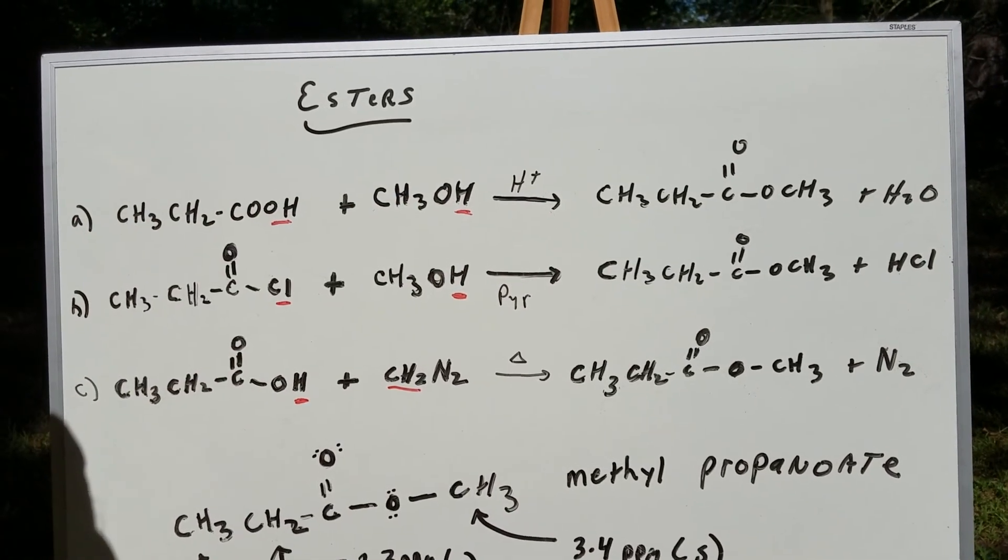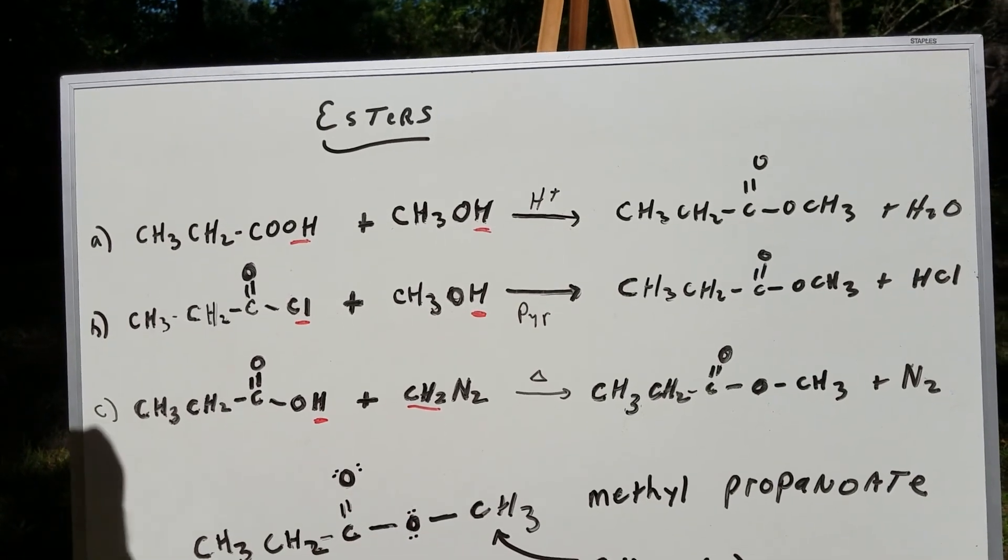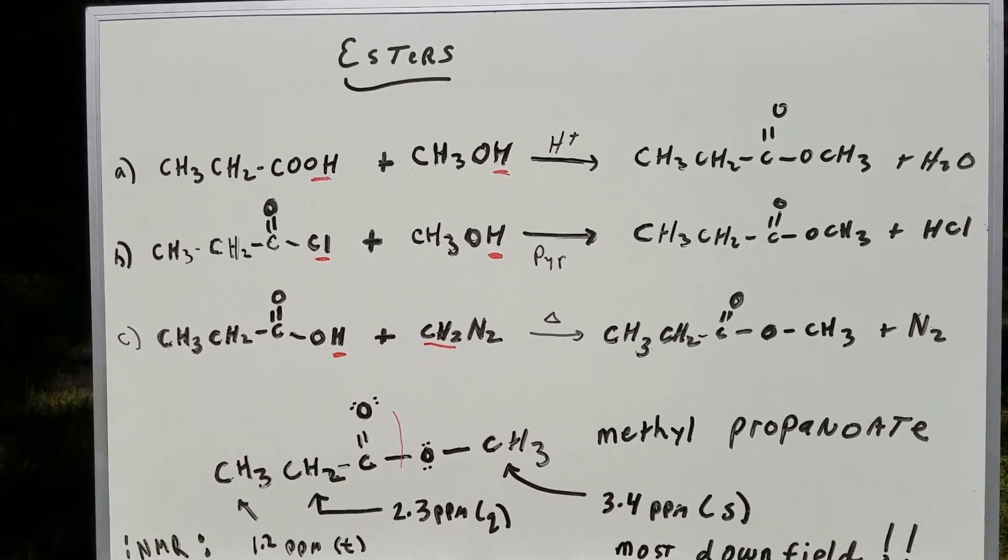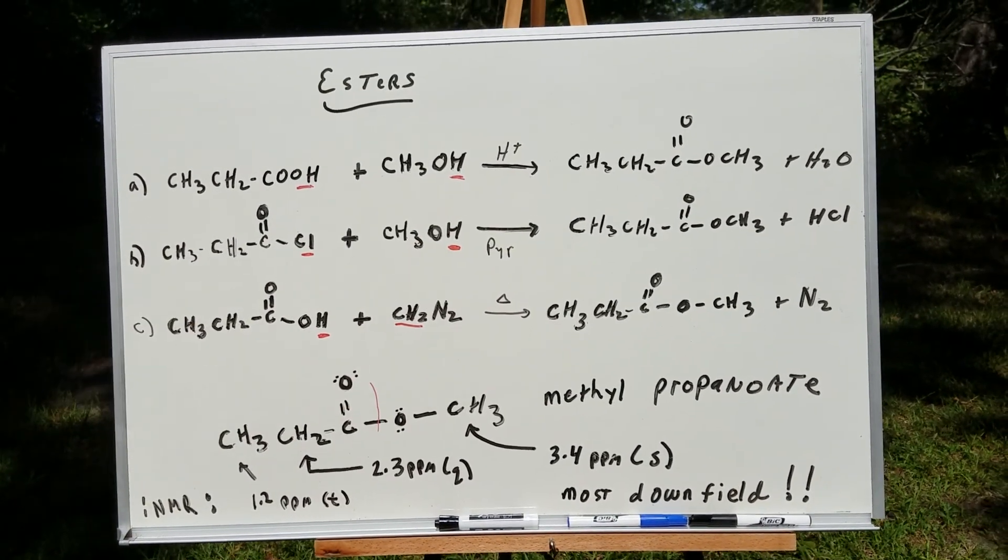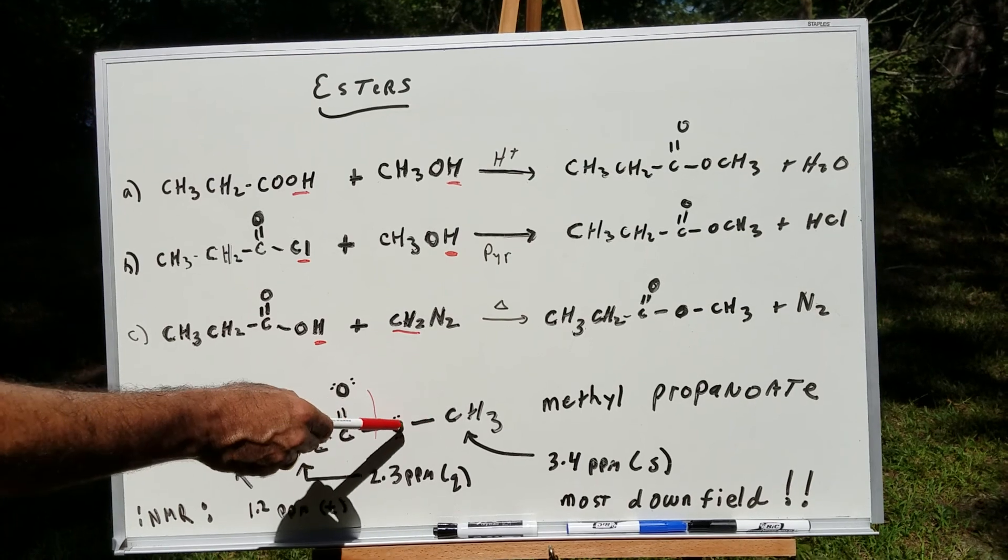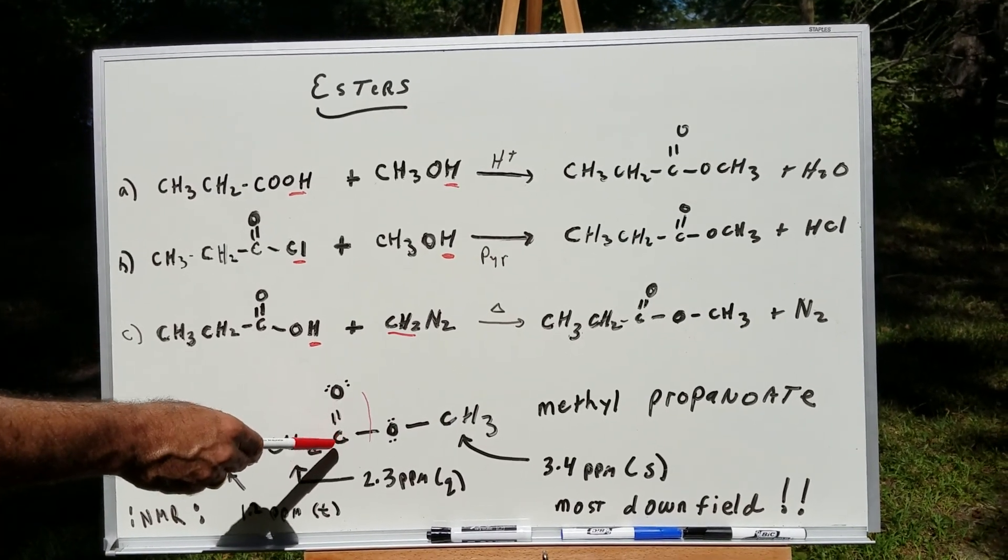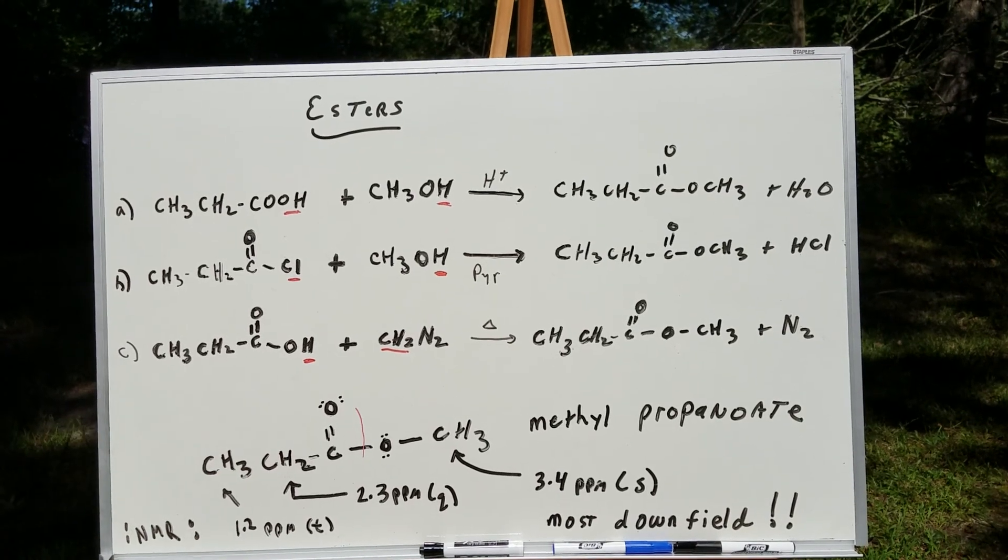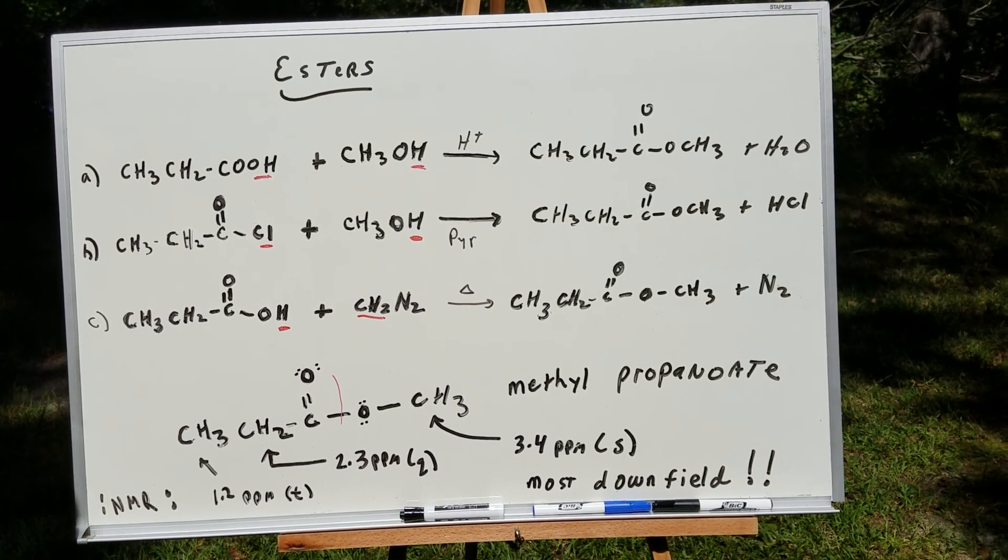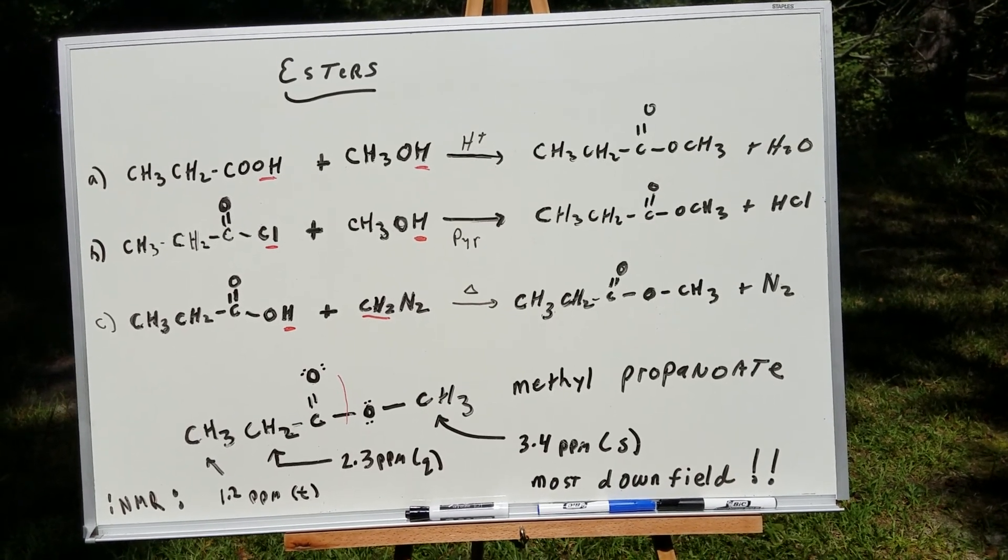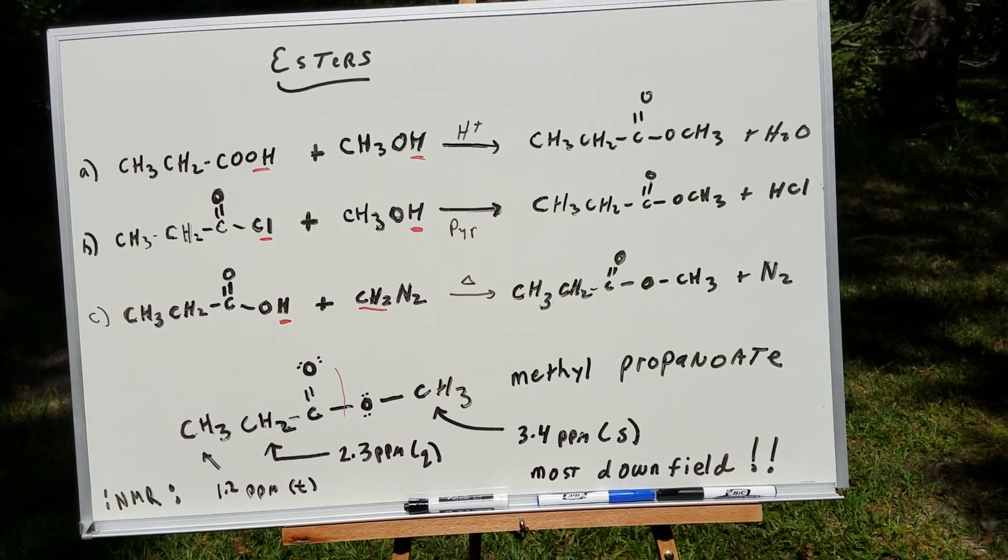The way you would name this methyl ester is you would simply bisect it down the middle. If you bisect this down the middle, you would first name the group attached to the single bonded O. And that would be methyl. Then you would simply name the acid it came from. And that acid would be propanoic acid. So you would take off the suffix O-ic and add O-ate. Putting it all together, this would be methyl propanoate.